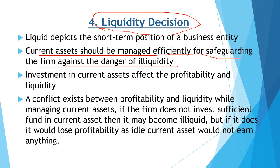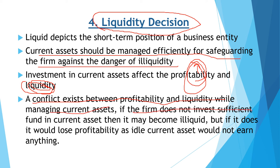Investment in current assets affects both profitability and liquidity. When we raise profitability by investing money in machinery or fixed assets, the money is tied up long-term and liquidity decreases, risking daily operations. A conflict exists between profitability and liquidity when managing current assets: if the firm does not invest sufficient funds in current assets, it may become illiquid.